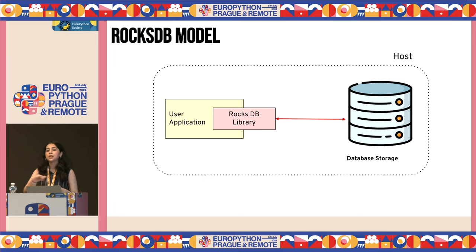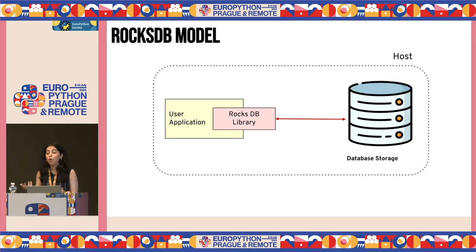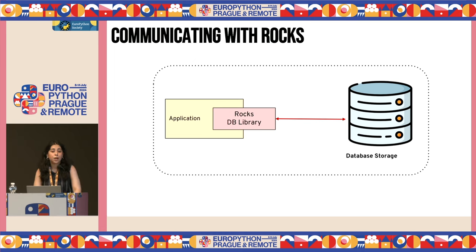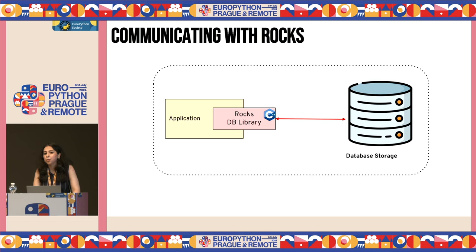With the separate server removed, a lot of complexity is removed from the picture. There's no overhead of network communication, and it offers minimal latency, making it a perfect solution for applications demanding high performance and responsiveness. RocksDB is primarily built in C++, and you first have to download it from source. You build it as a shared library, and then you can integrate it with your applications. It's compatible with multiple languages like C++, Java, Rust, Go, and of course Python.